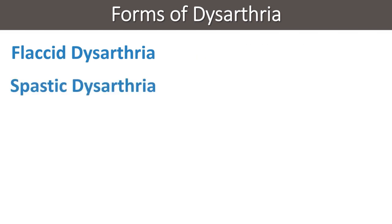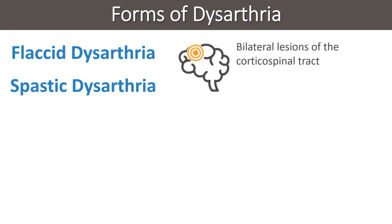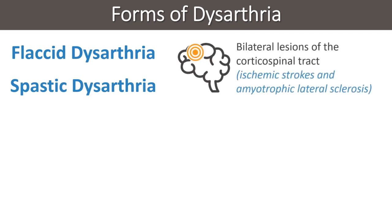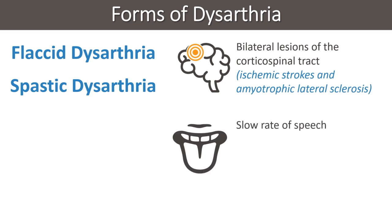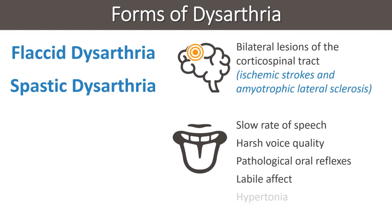Spastic dysarthria is common in disorders involving bilateral lesions of the corticospinal tract, such as ischemic strokes and amyotrophic lateral sclerosis. It presents with a slow rate of speech, harsh voice quality, pathological oral reflexes, labile affect, hypertonia, and hyperactive gag reflex.